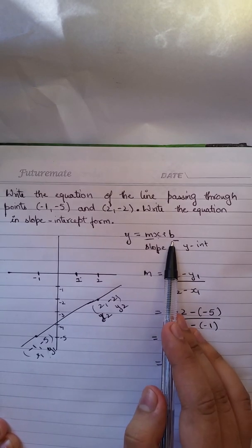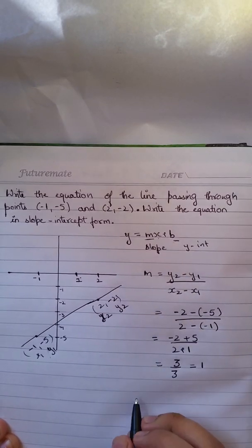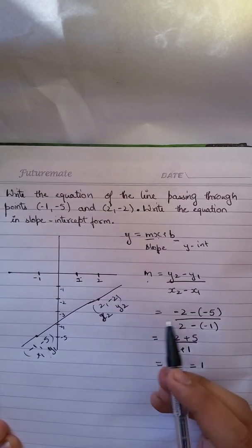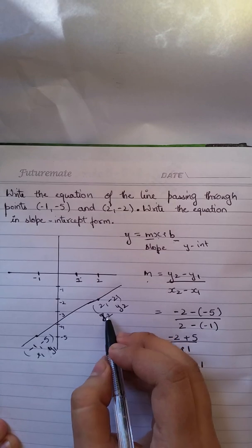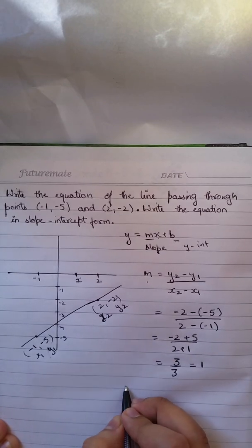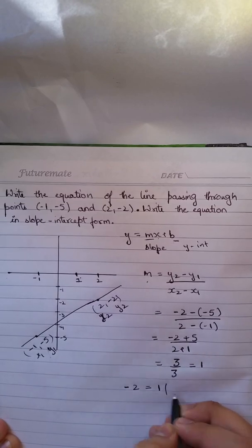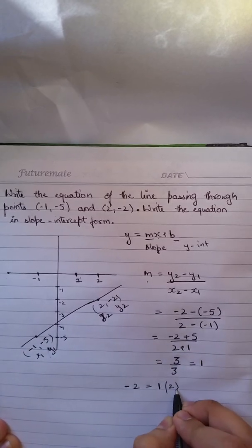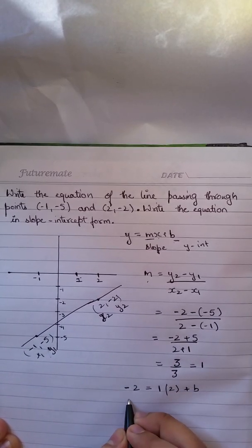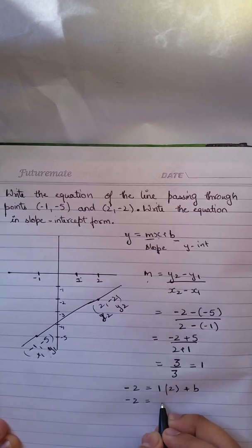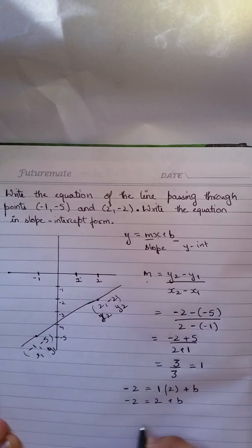Now I'll find my b, which is my y-intercept, by plugging in m and any one of the points. So let's say I plug this. So I get -2 equals my slope 1 times x which is 2 plus b. So I have -2 equals 2 plus b.